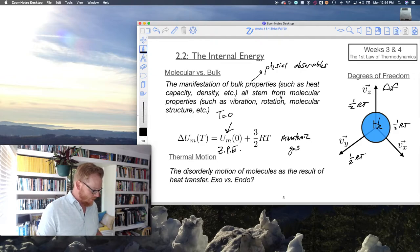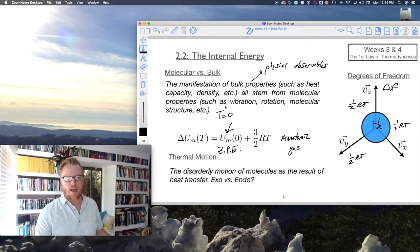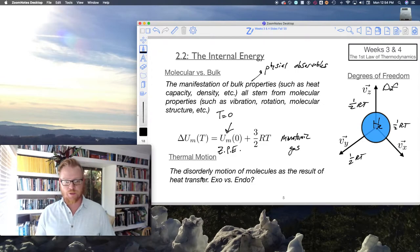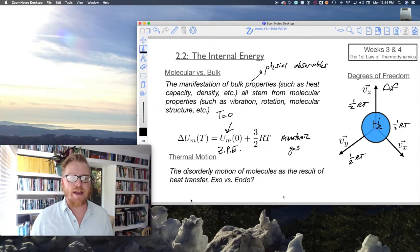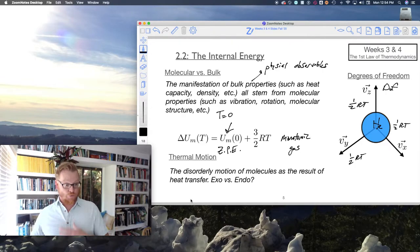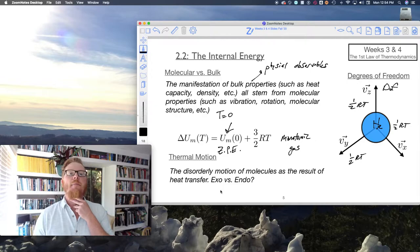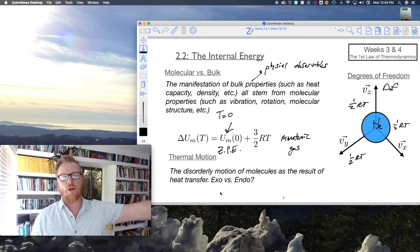So let's see here. And so now, finally, this discussion of thermal motion, so the disorderly motion of molecules as a result of heat transfer, that is a bulk manifestation of molecular properties, this disorderly motion. And so the idea here is, if we think of this in exo versus endo, so like in an exothermic process, for example, a molecule is transferring heat to other molecules. Well, what does that mean?